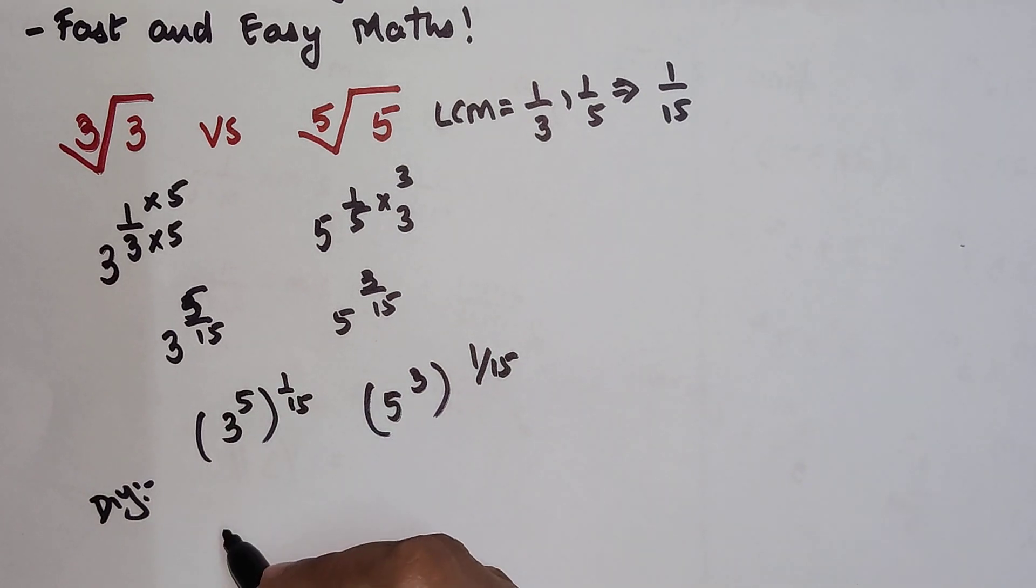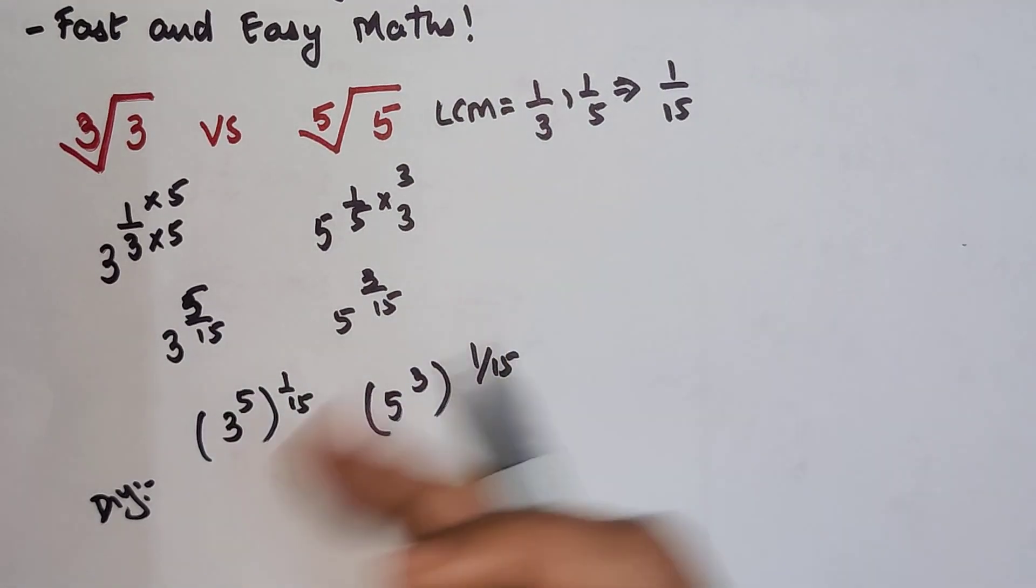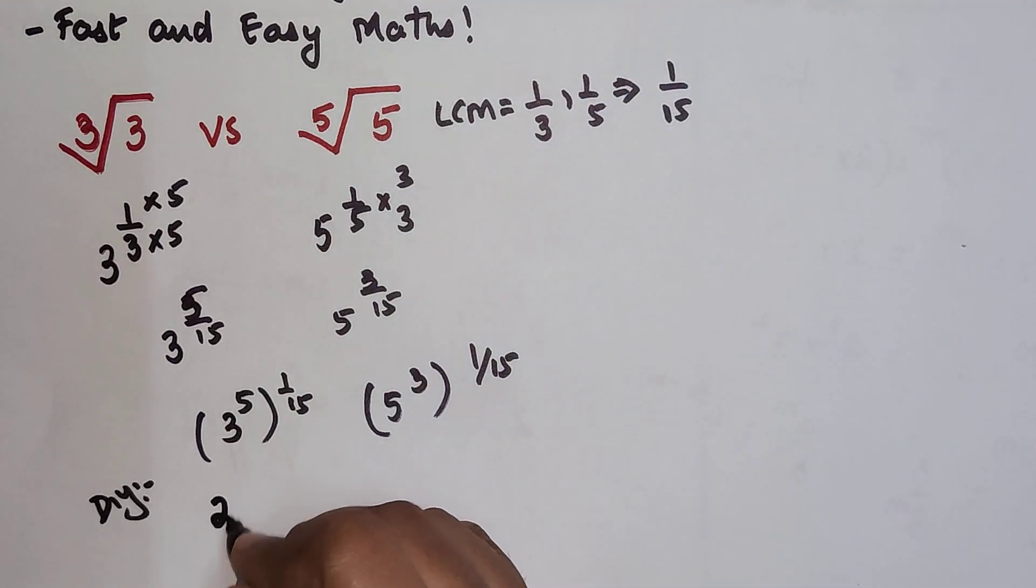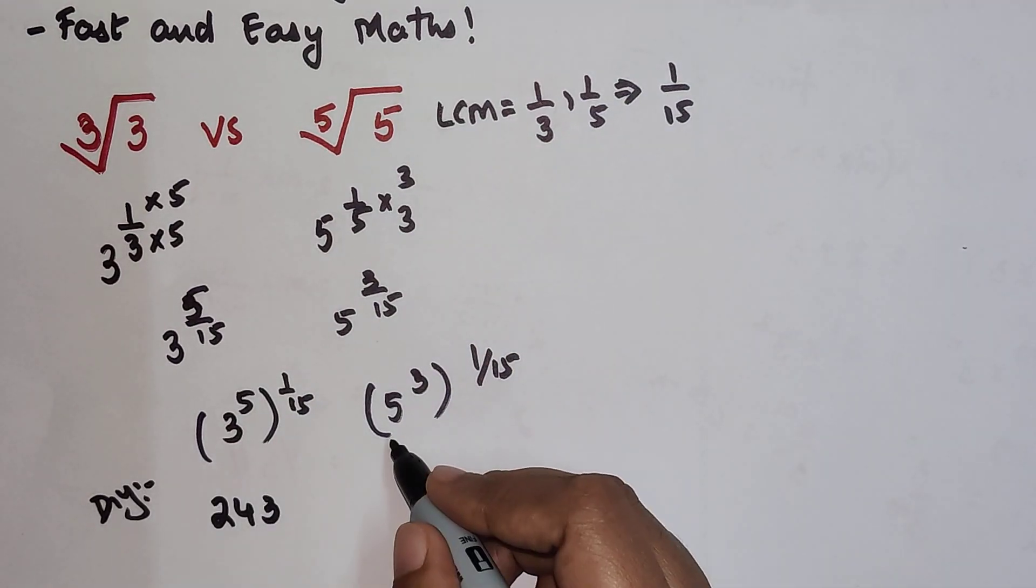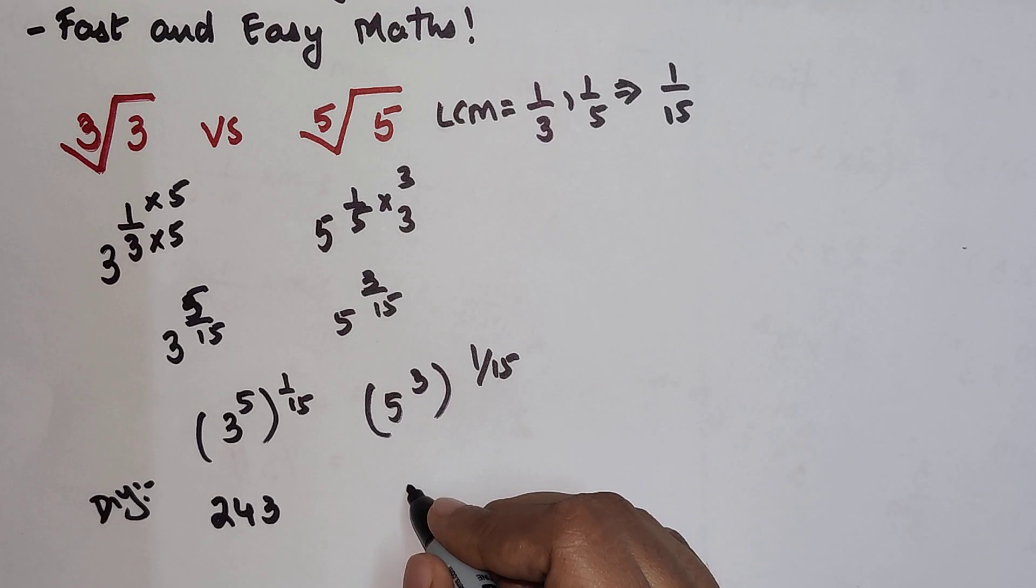3 raised to 5 is 243, and 5 raised to 3 is 125.